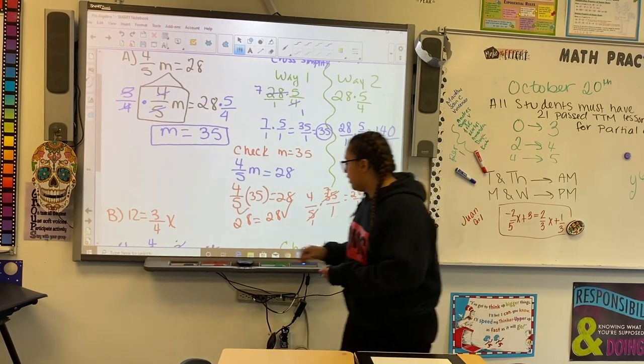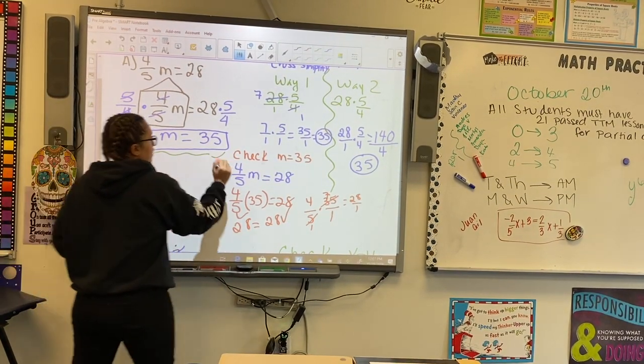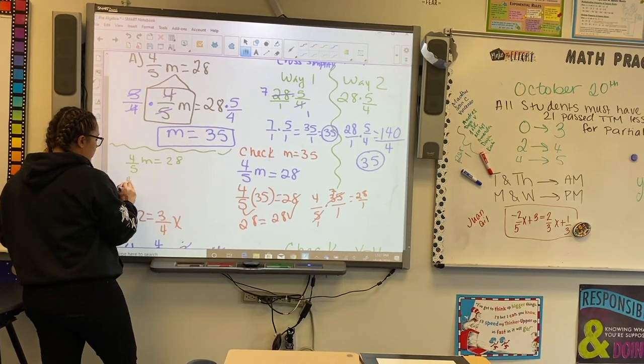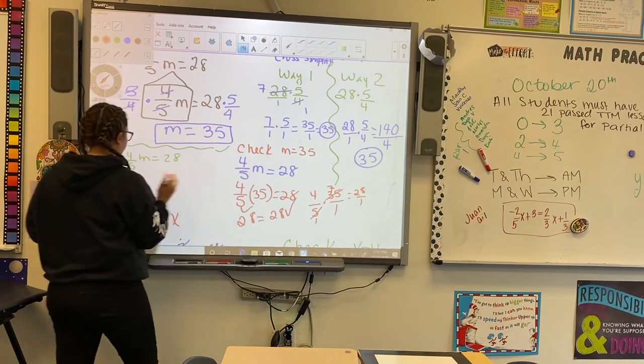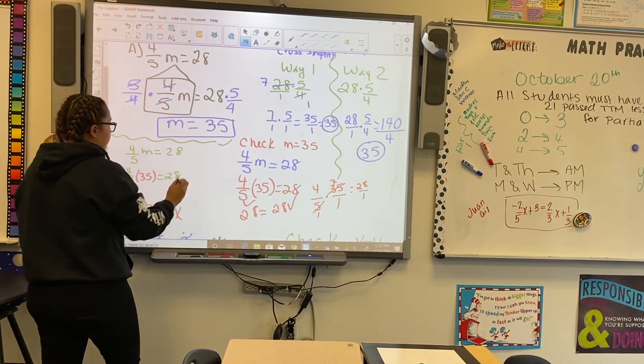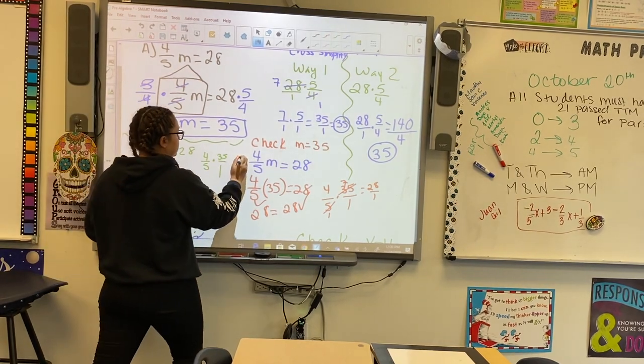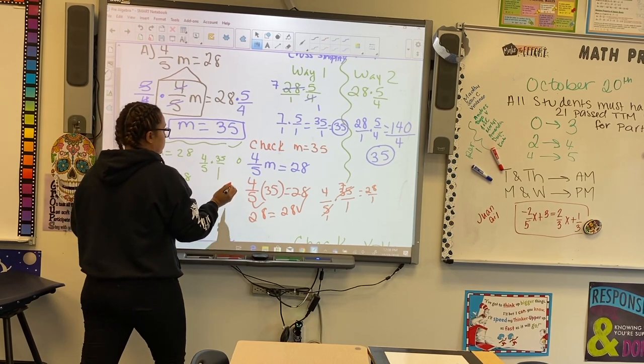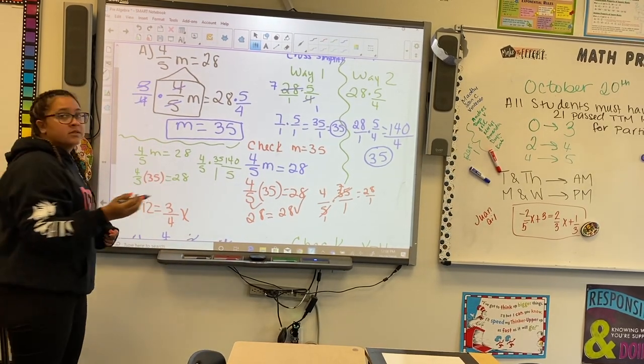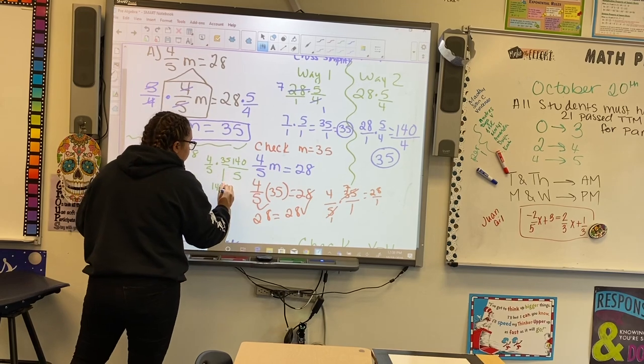Now, if this confused you, we could also do it the other way, which I'm going to do it on this side. So, I can say 4 over 5m equals 28. 4 over 5 times 35 equals 28, and then we have 4 over 5 times 35 over 1. 4 times 35 is 20, carry the 2. 4 times 3 is 12, 14, 140. 5 times 1 is 5. And 140 divided by 5 is 28. 28 equals 28. Yes.